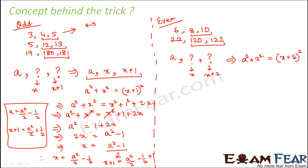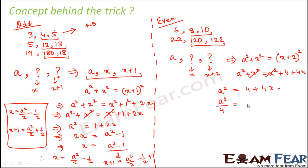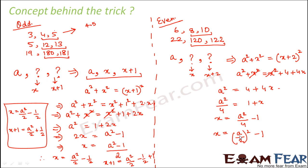For even numbers, the equation becomes a² + x² = (x + 2)². Expanding: a² + x² = x² + 4 + 4x. The x² terms cancel, giving a² = 4 + 4x, so a²/4 = 1 + x, and therefore x = a²/4 − 1, which equals (a/2)² − 1.